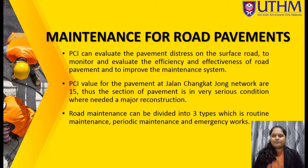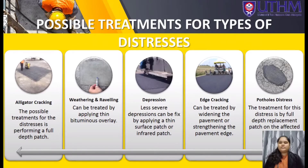PCI values for the pavement at Jalan Changkat Jong are 15. Therefore, the section of pavement is in very serious condition and requires major reconstruction. Road maintenance can be divided into three types: routine maintenance, periodic maintenance, and emergency works. Possible treatments for types of distress: alligator cracks result from the inability of the structure to support repeated loads due to softening of material associated with increased moisture content.